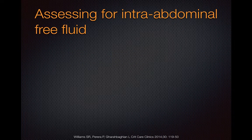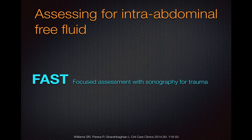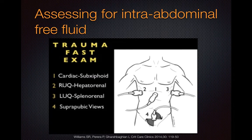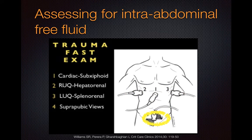In assessing for intra-abdominal free fluid we can use the same technique that many of you may have heard of called FAST, which stands for Focused Assessment with Sonography for Trauma. It's an examination technique initially developed for trauma patients, and in this examination they do a number of views starting with the right upper quadrant, left upper quadrant, as well as the pelvic views to look for intra-abdominal free fluid — which in the setting of trauma is really looking for bleeding.